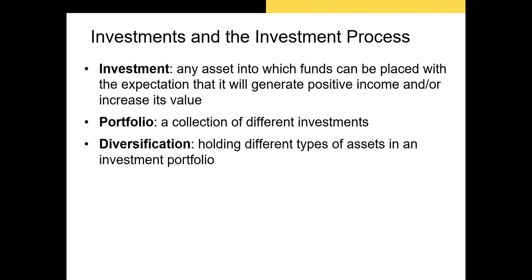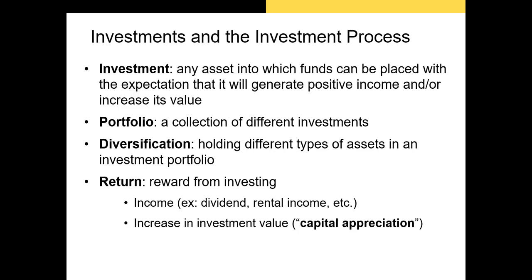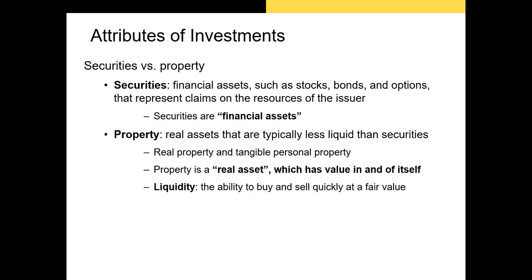Diversification occurs when you hold different types of assets in a portfolio. You can diversify across stocks, bonds, real estate, etc., or by holding different stocks like Berkshire Hathaway and Apple, or US stock and Chinese stock. A return on your investment is your reward for investing. There are two ways to generate a return: first, you can earn income — for example, a long-term bond pays coupon payments and rental property provides rental income. If you sell an asset for more than you bought it for, you earn capital appreciation — the value of your asset increased during the holding period. When assets decrease in value during the holding period, this is called capital depreciation.